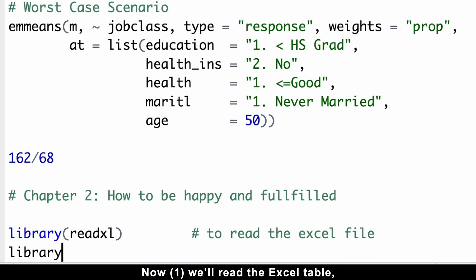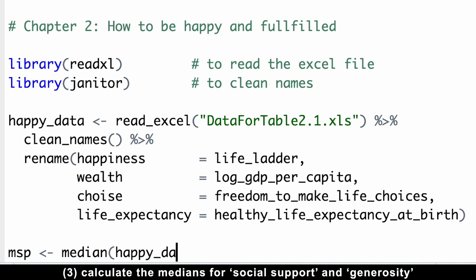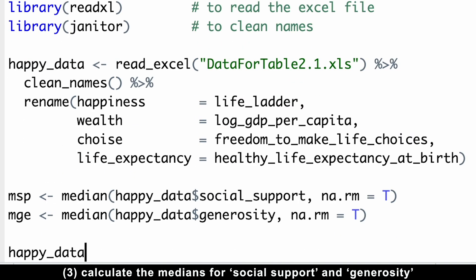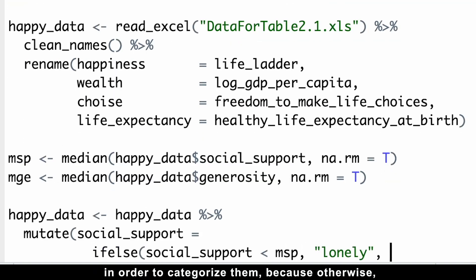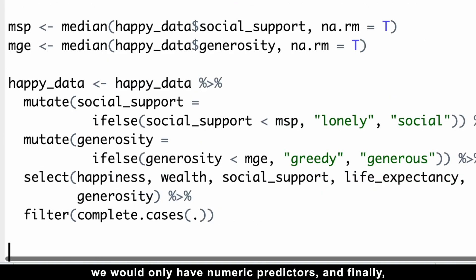Now, we'll read the Excel table, clean the names and rename some of them, calculate the medians for social support and generosity in order to categorize them, because otherwise we would only have numeric predictors. And finally, we'll remove any rows with missing values to ensure a clean and complete dataset for our analysis.